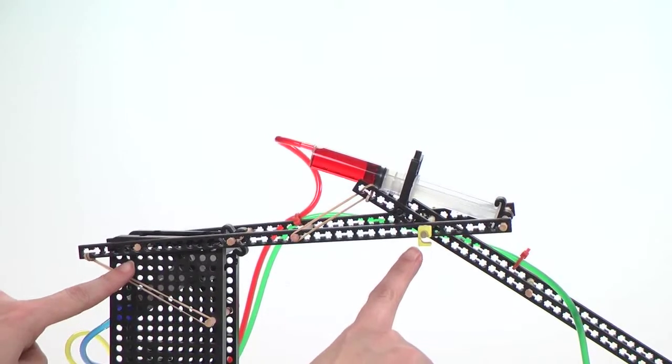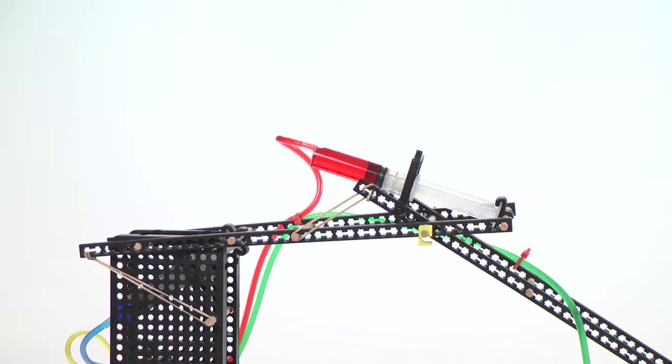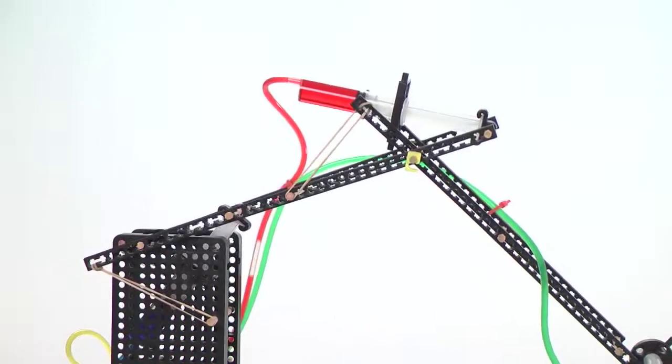The pivot points allow the pistons to create a wide range of motion. In the construction process, rubber bands are used to create a counterforce, which improves the motion of the arm when being lifted.